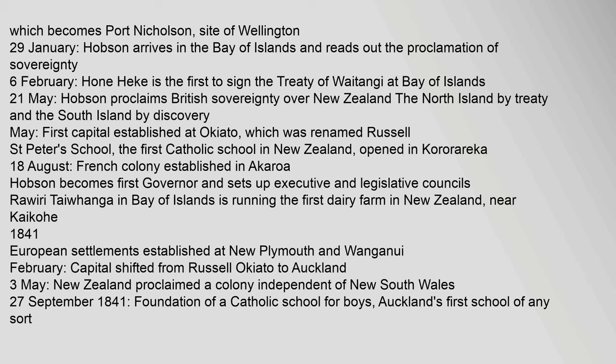21 May: Hobson proclaims British sovereignty over New Zealand — the North Island by Treaty and the South Island by Discovery. May: First capital established at Okiato, which was renamed Russell. St Peter's School, the first Catholic school in New Zealand, opened in Kororareka. 18 August: French colony established in Akaroa. Hobson becomes first governor and sets up executive and legislative councils. Rawiri Taiwhanga in the Bay of Islands is running the first dairy farm in New Zealand.